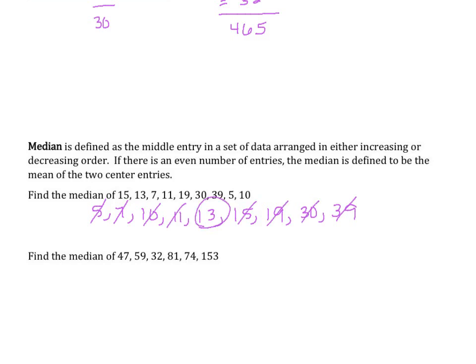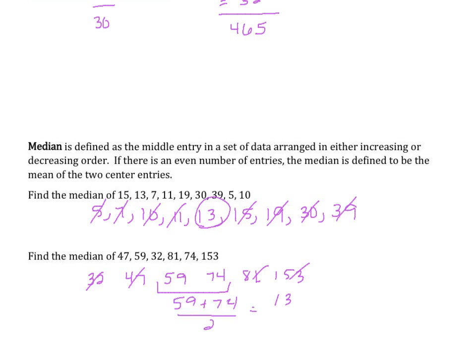Find the median of: 47, 59, 32, 81, 74, and 153. Arranging them in order: 32, 47, 59, 74, 81, and 153. Ticking off one from the front and one from the back, I see that I now have two left over that we can't tick off. So to find the median, we add these two numbers and find their average: 59 plus 74 is 133 divided by 2, which is 66.5.